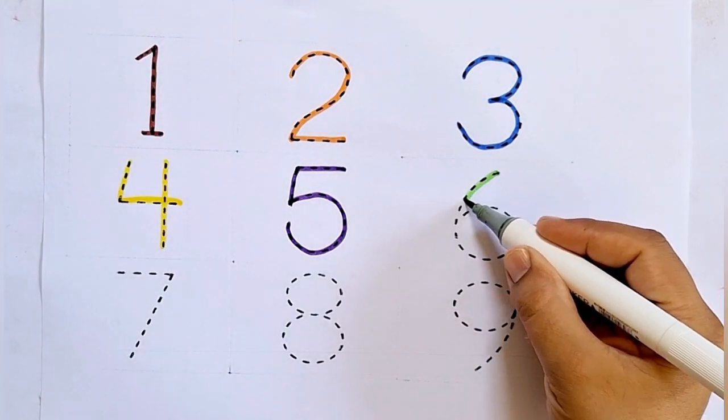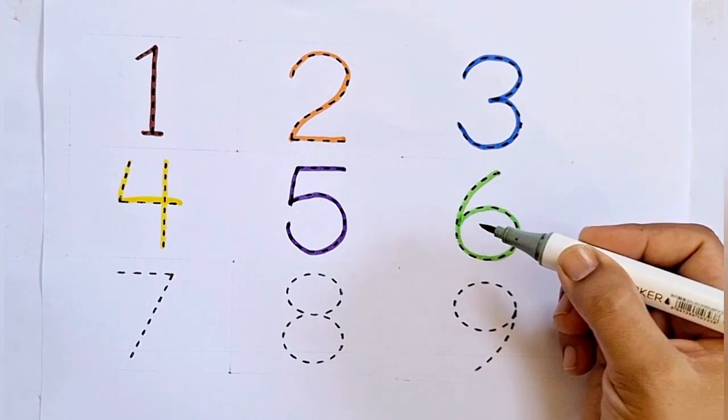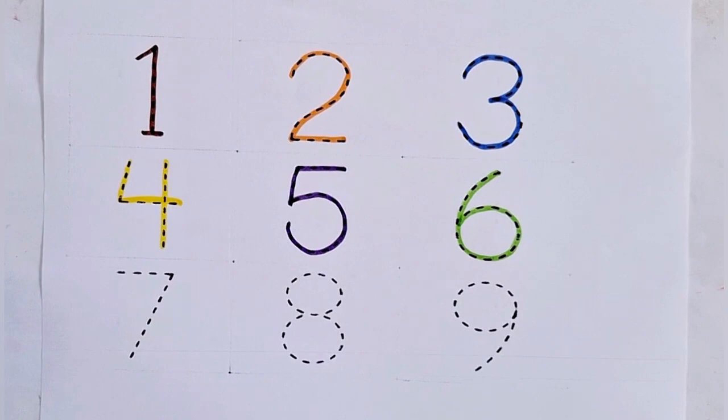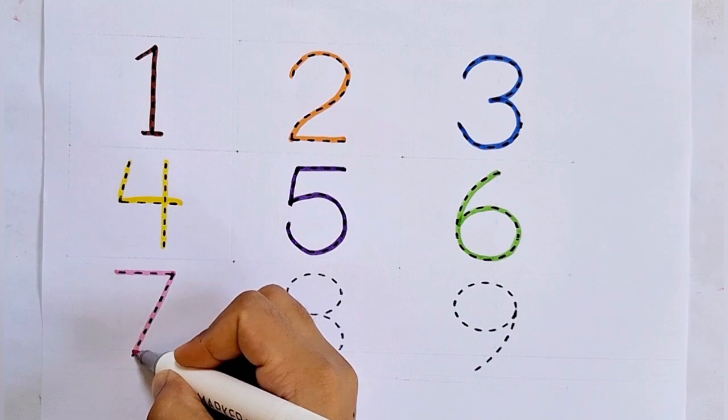Six, this is six. After five comes six. Seven, this is seven. After six comes seven.